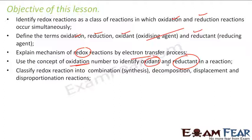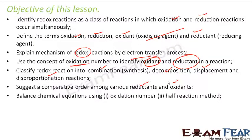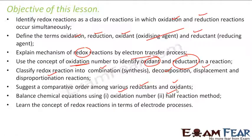We'll classify a redox reaction into combination reaction, decomposition reaction, displacement reaction, and disproportionate reactions. We'll find the comparative orders among various reactants — reductant and oxidant, who is most powerful — and we'll learn how to balance the chemical reaction using oxidation number and half reaction methods. We'll also learn the concepts of redox reaction in terms of electrode processes.